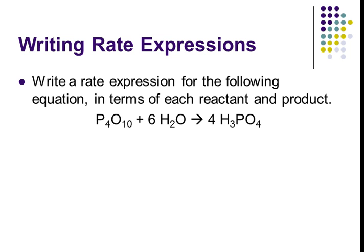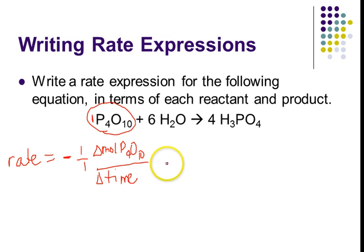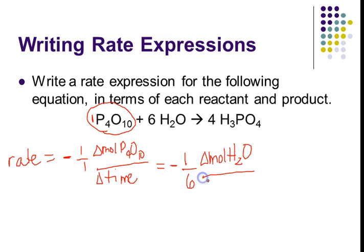We're going to write a rate expression for this reaction in terms of each reactant and product. We'll start with P₄O₁₀. Is it a reactant or a product? It's a reactant. And what's its coefficient? One. So we need a negative sign because it's a reactant — 1 over 1 — change in moles of P₄O₁₀ over the change in time. For every mole of P₄O₁₀ that reacts, six moles of water react. So I'm going to use up water six times faster, but it's the same reaction. So I want to make the overall rate come out the same. When I do this for the water, I need to do negative one-sixth, change in moles of H₂O over the change in time.